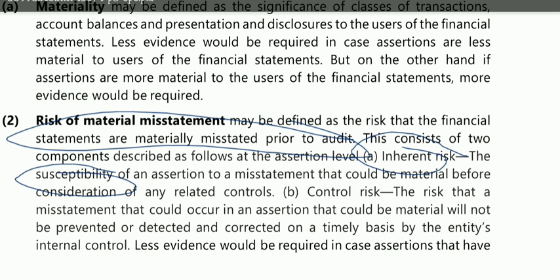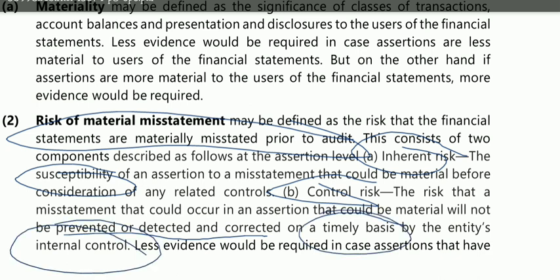Control risk is the risk that a misstatement that could occur in an assertion and that could be material will not be prevented, detected, or corrected on a timely basis by the entity's internal control. More detailed explanation is in chapter four. So control risk means: if a material misstatement occurred in a particular assertion, the entity's internal controls would fail to prevent it, detect it, or correct it on a timely basis.